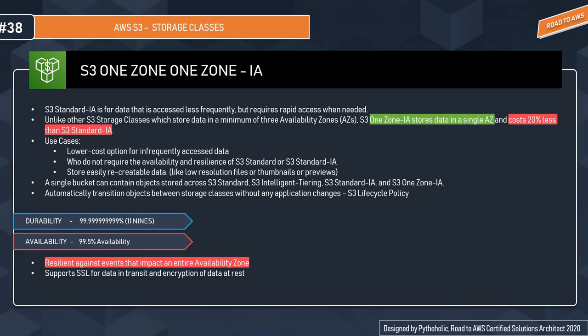S3 One Zone IA is also for infrequently accessed data that requires rapid access when needed. The key difference is that unlike other S3 storage classes, which store data in a minimum of three availability zones, S3 One Zone IA stores data in a single availability zone. This makes it 20% less expensive than Standard IA, making it a good option for budget-constrained users who are fine with lower availability, or for data that can be easily recreated.